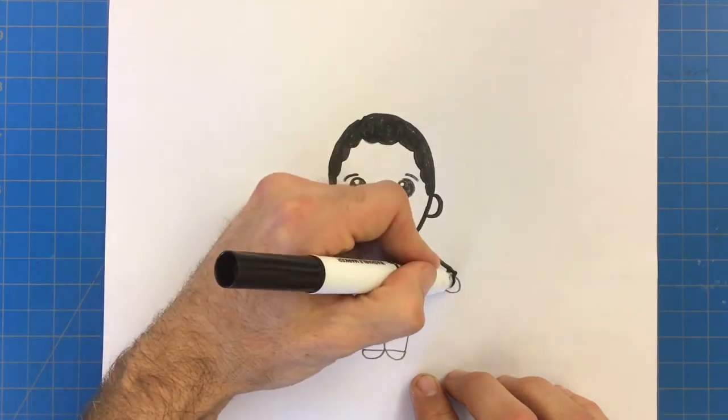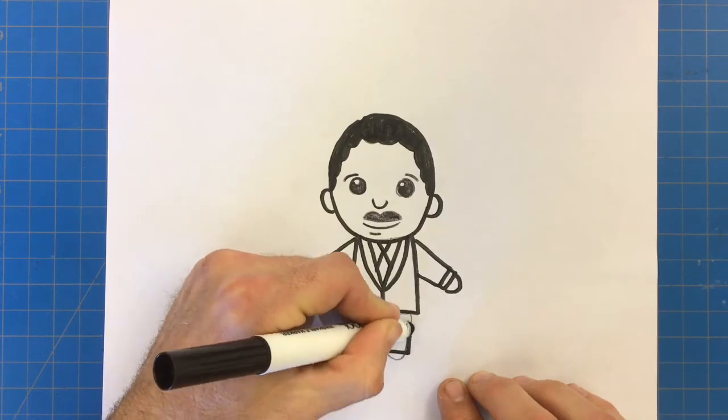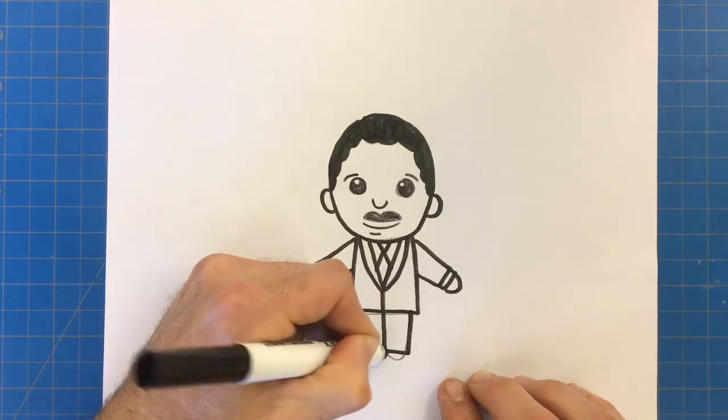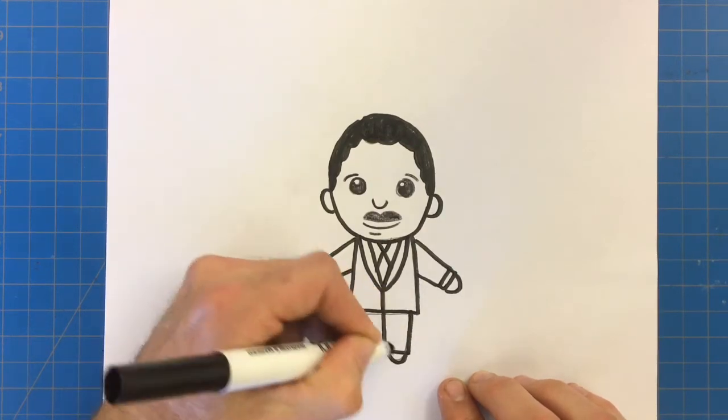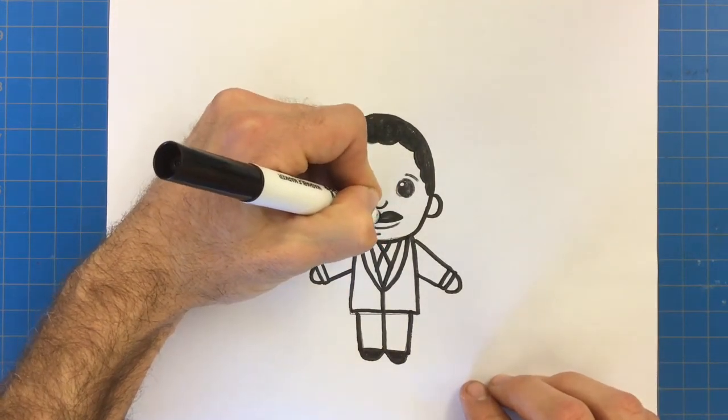Cuffs. Shirt. Shirt, sleeve, cuff. Hands. Trousers or pants. And the shoes. I'm going to fill in the shoes too. Because normally he wore dark shoes. All right. So now that we've got our lines outlined with the marker.